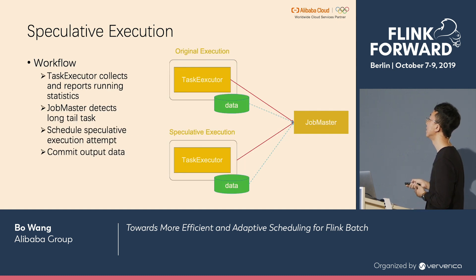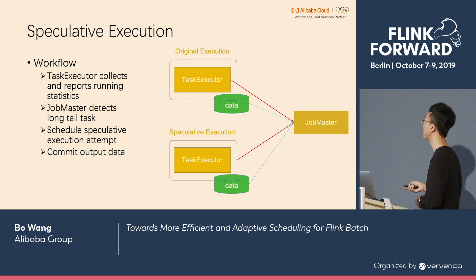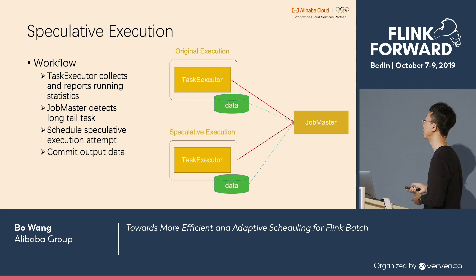Here is the workflow of speculative execution. Throughout the execution lifecycle of a task, the executor collects and reports running statistics to the job master periodically via a heartbeat payload. The job master decides which sub-tasks are slow and performs corresponding operations, such as scheduling a speculative execution attempt on a new machine. When the speculative attempt is scheduled, whichever finishes first has its output committed.